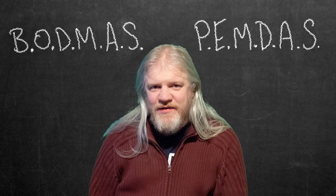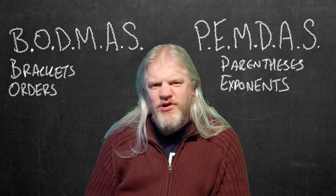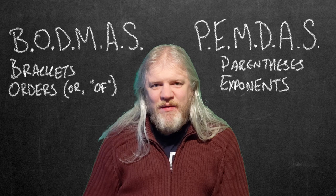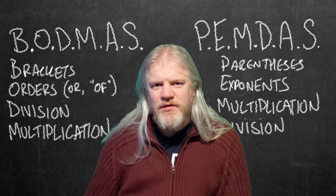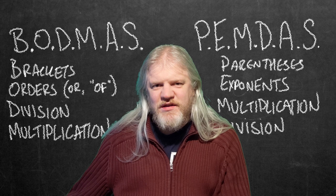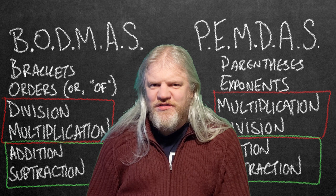The first letter is either brackets or parentheses, which are the same. But the second letter is sometimes ORDERS — which is squaring, cubing, square roots, things like that — or it's just the word OF, which is pointless acronym filler. In Britain the next two letters are DM for division and multiplication, but in America it's MD for multiplication and division. The reason this doesn't matter is that the third problem with this acronym is it doesn't tell you everything you need to know to use it. Division and multiplication have the same precedence, and you're just expected to know that.